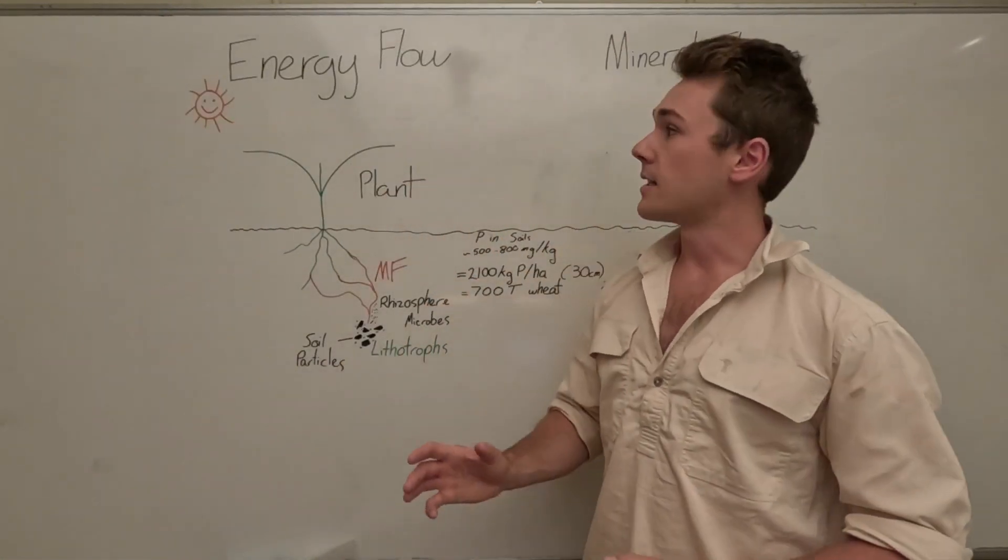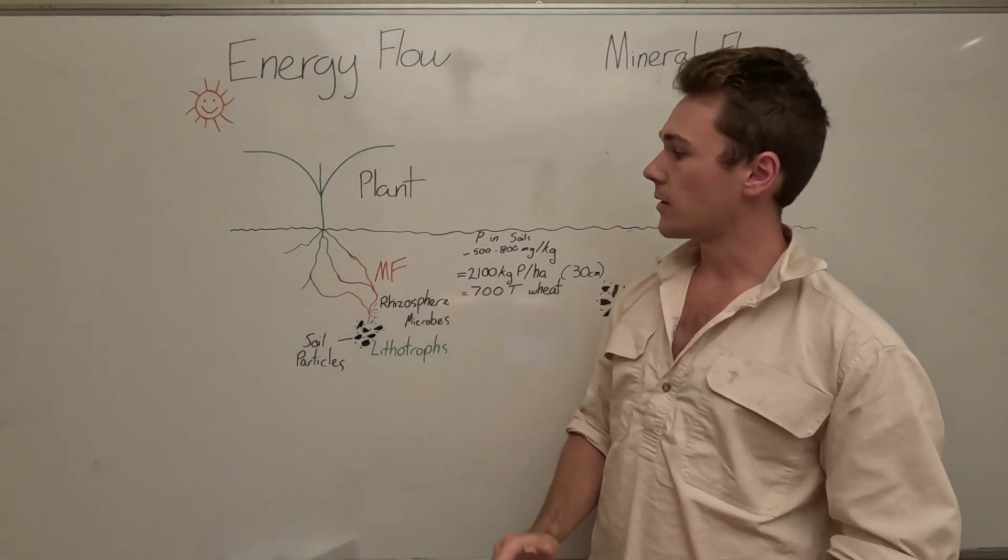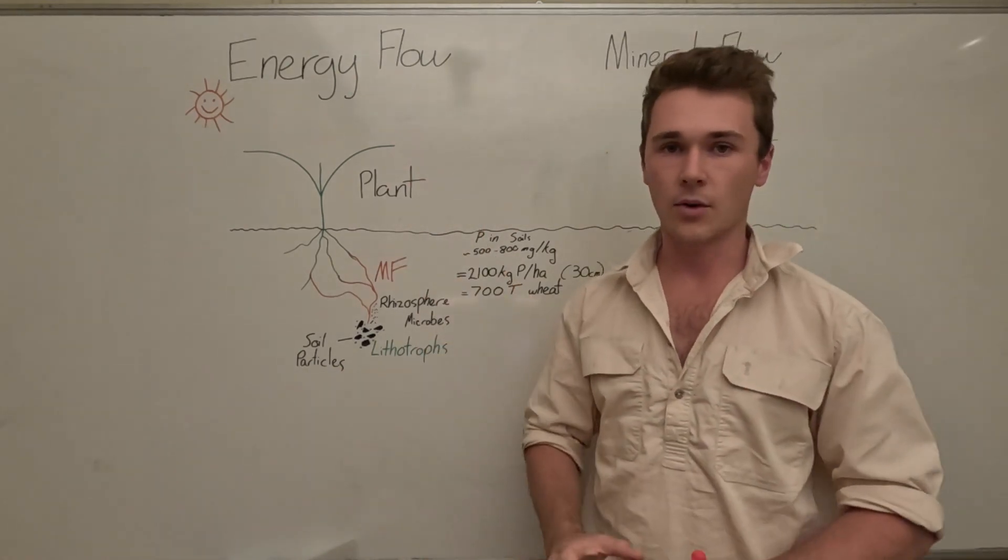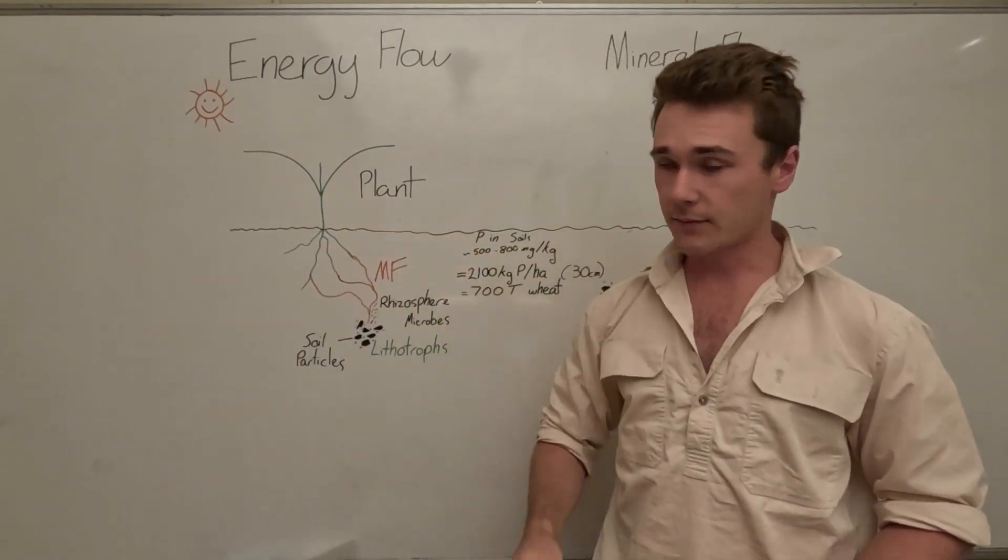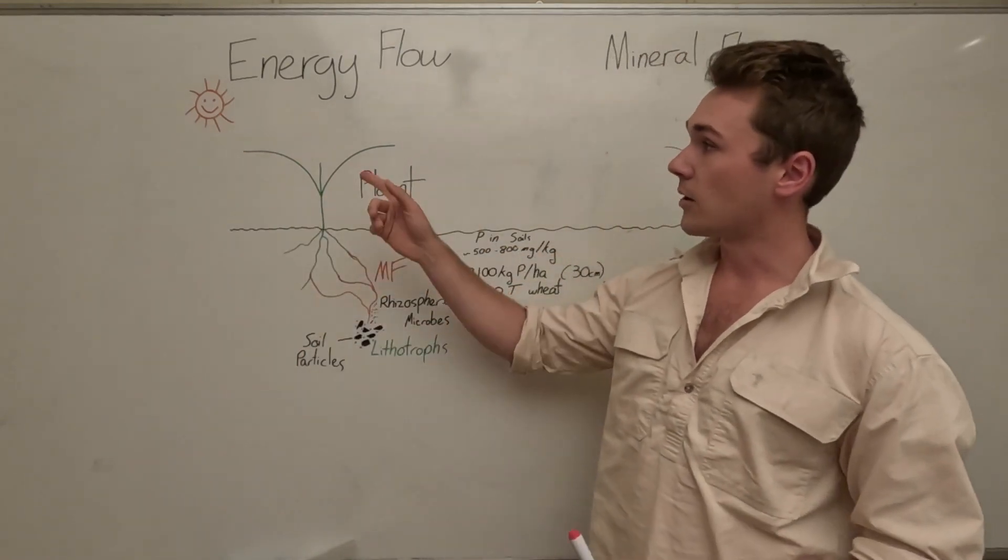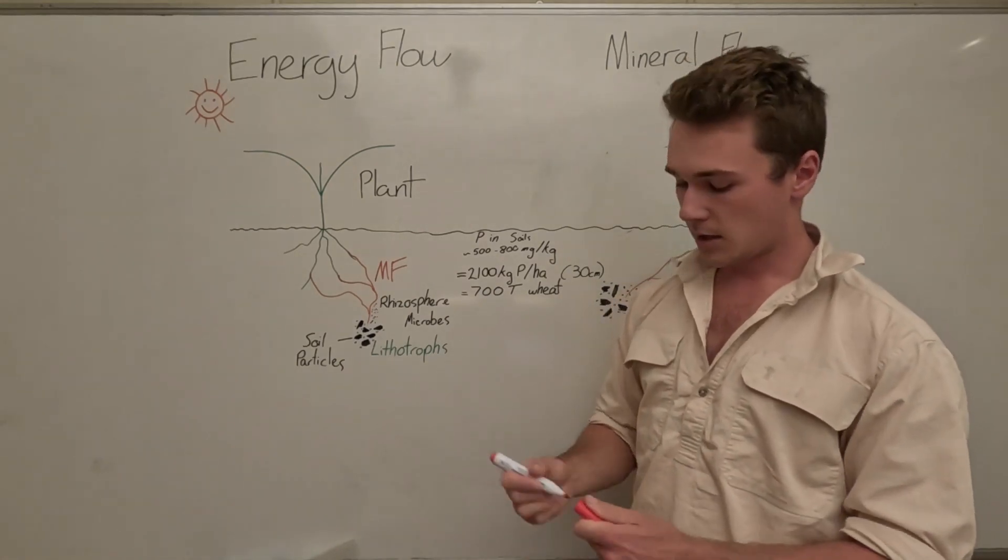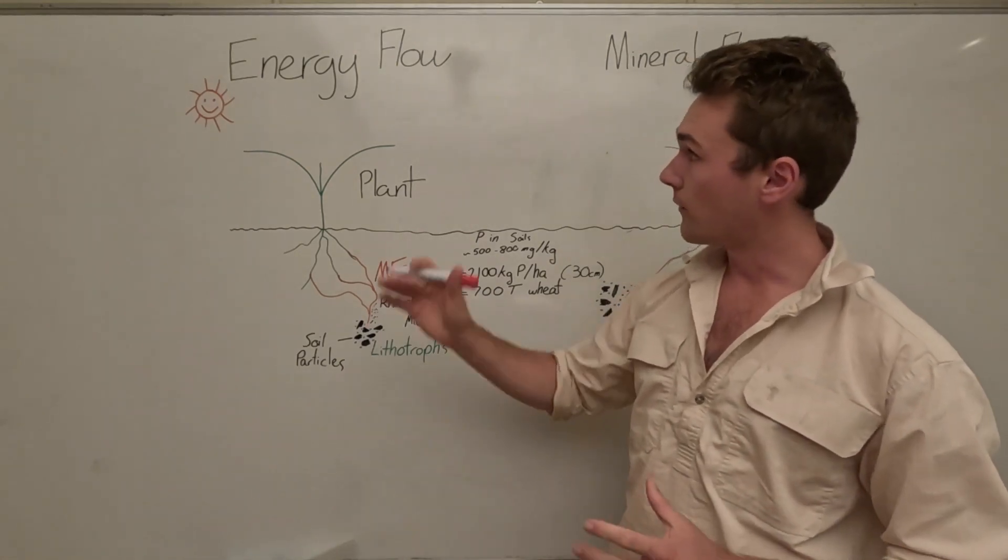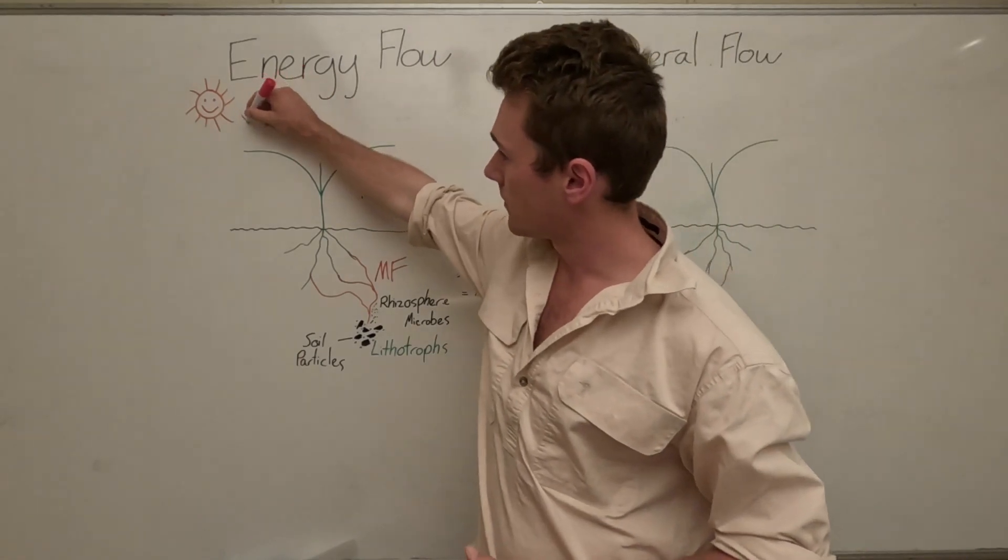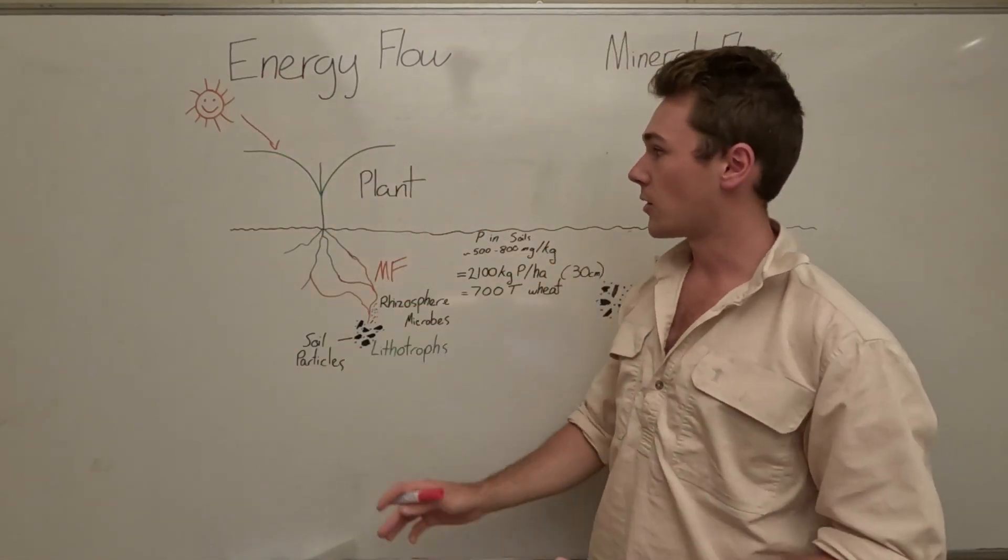The first thing to understand is the energy flow. All of our energy on earth comes from the sun and plants have done this pretty cool thing where they can convert sunlight straight into a chemical form of energy in sugars.